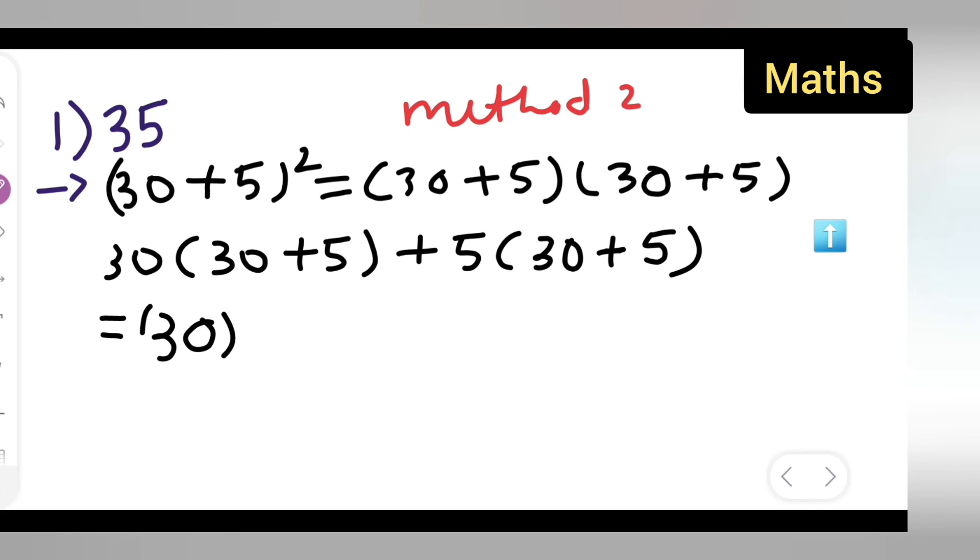So 30² + 30×5 + 5×30 + 5². This is 5². So 30² is 900, plus 3×5 = 15, so 150.